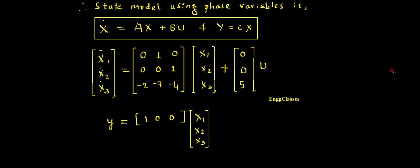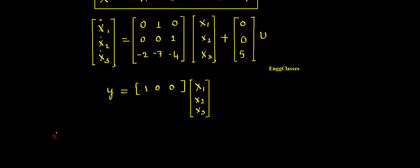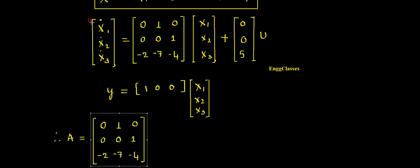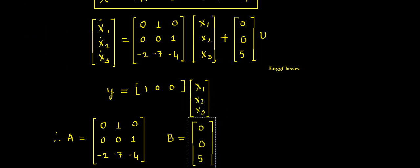To sum up: A is the 3×3 matrix with rows [0,1,0], [0,0,1], and [−2,−7,−4]. B is equal to [0, 0, 5], the 3×1 matrix.